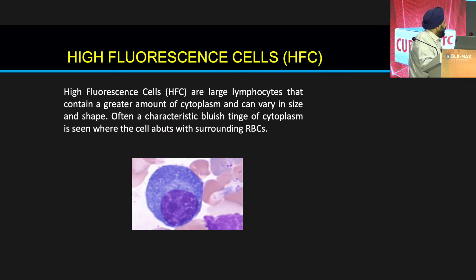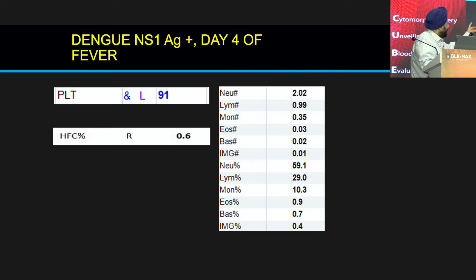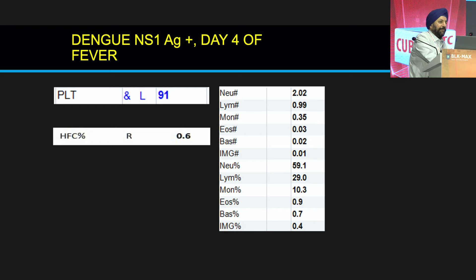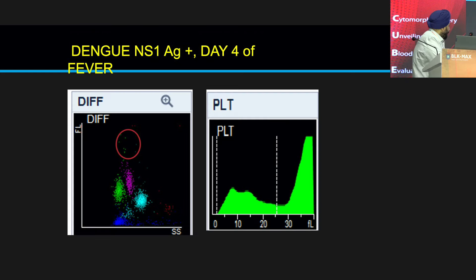The next important parameter is high fluorescence cells, or HFC, as shown in the SFQ. These are nothing but large lymphocytes — your Downy cells or virocytes. We have established a normal range; on our analyzer it is up to 0.4%. Here is a prototype patient — a dengue NS1 positive patient on day 4 of fever. HFC usually begins to rise from day 4, because as dengue progresses from relative neutrophilia to relative lymphocytosis, the evolution of HFC begins around day 4. On day 4, this patient's platelet count was 91,000 and HFC was 0.6%, visible as very few small green dots in the scatter plot.